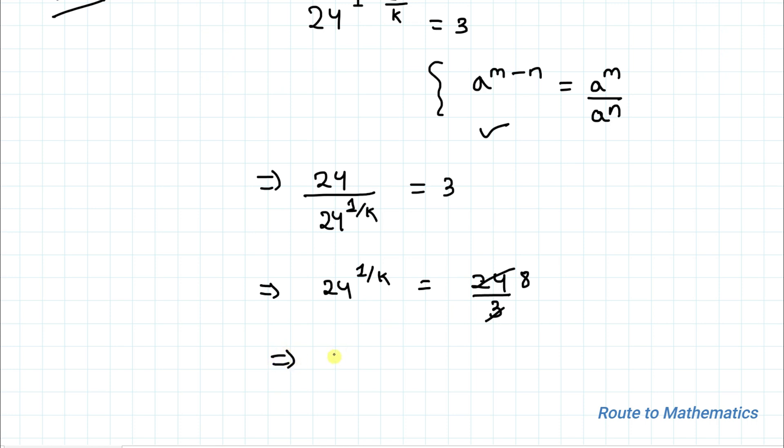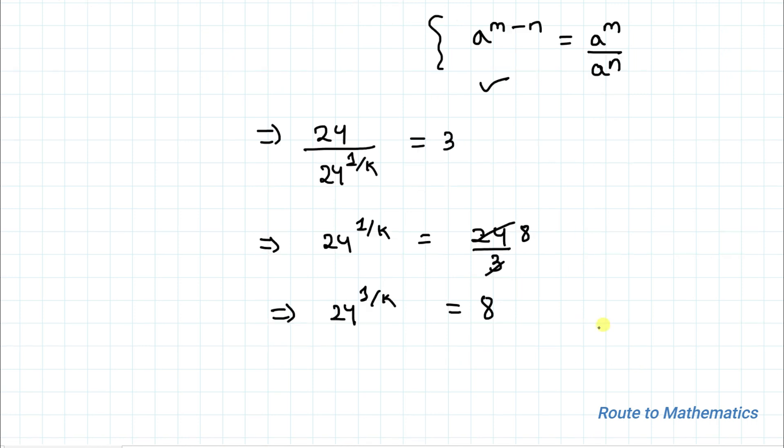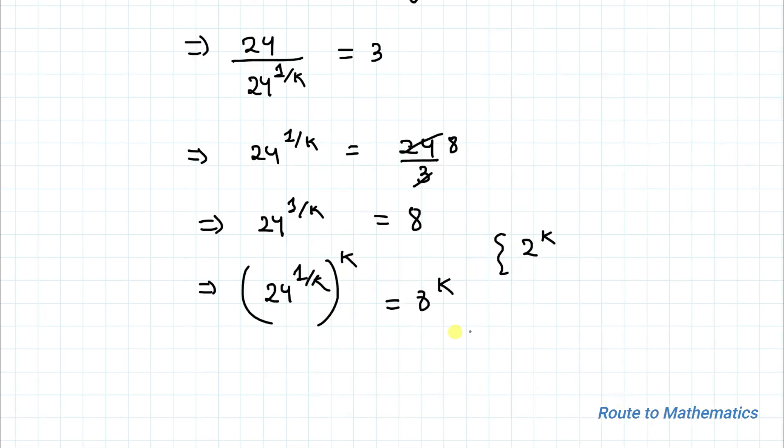So 3 gets cancelled out by 24, leaving us with 24 to the power 1 by k equals to 8. We are asked to find the value of 2 to the power k, so let's convert this 1 by kth power to kth power. By taking kth power on both sides, we have 24 to the power 1 by k to the power k equals to 8 to the power k. We know that a to the power m whole to the power n equals to a to the power m n. By multiplying, k gets cancelled out, so we have 8 to the power k equals to 24.